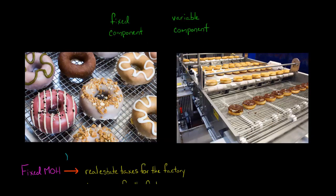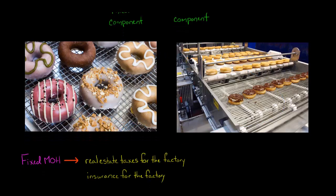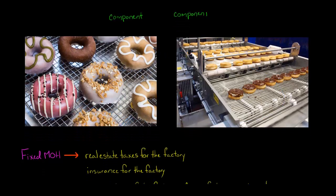What would be included in the fixed component of manufacturing overhead? Well, for example, real estate taxes that you incur for that factory. Any real estate taxes aren't going to change — they're not going to get higher or lower based on how many donuts you make. So the real estate taxes are going to be a fixed cost.